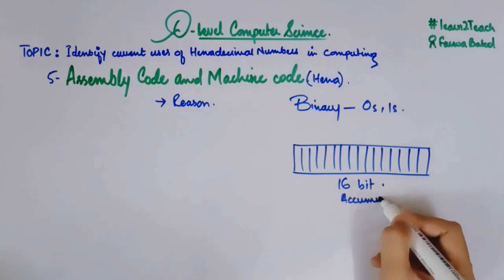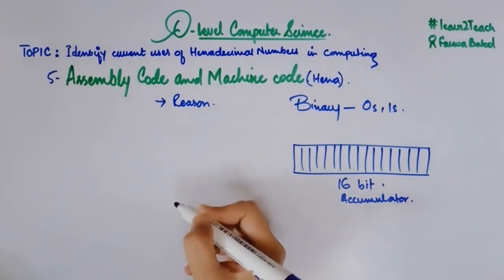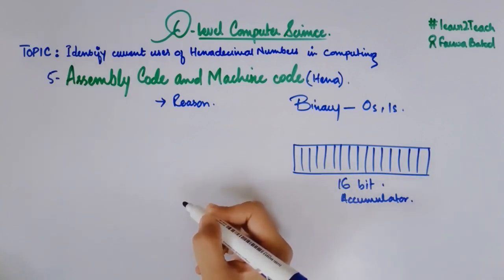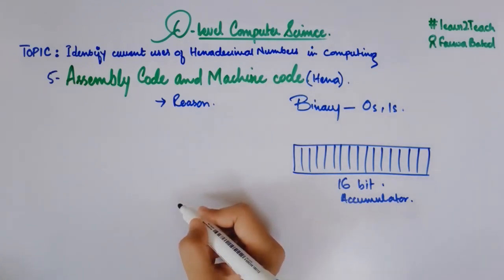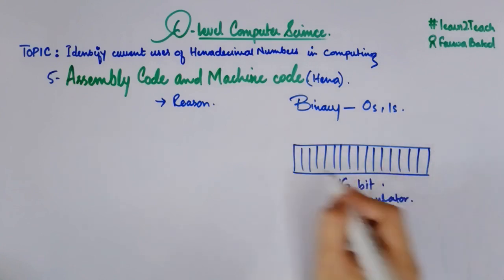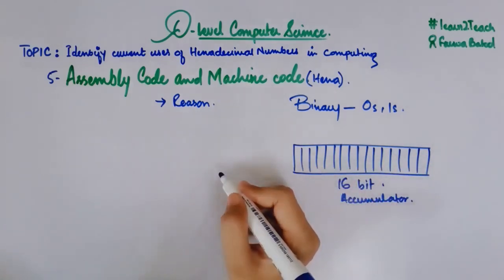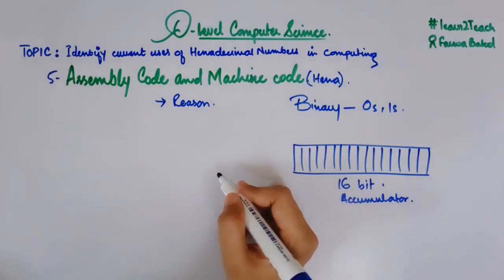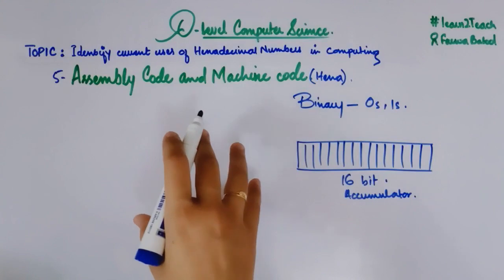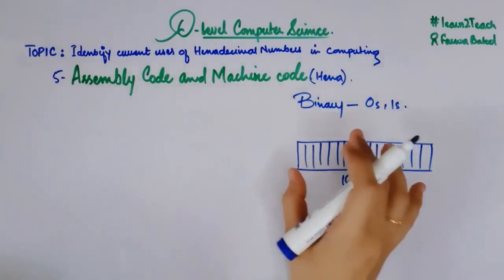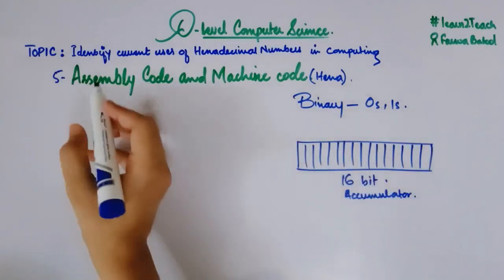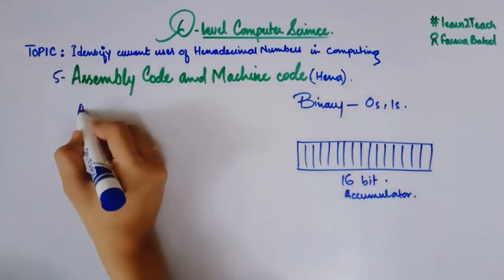I want to write a program in which I am trying to store some kind of binary data into this accumulator. So how am I going to do it using assembly code or machine code? Let's see that. So let me write assembly code first. In order to store some value into this register, let me write assembly code for it.